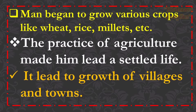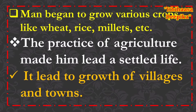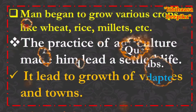Man began to grow various crops like wheat, rice, millets, etc. The practice of agriculture made him lead a settled life. He settled in one place, and this led to the growth of villages and towns.